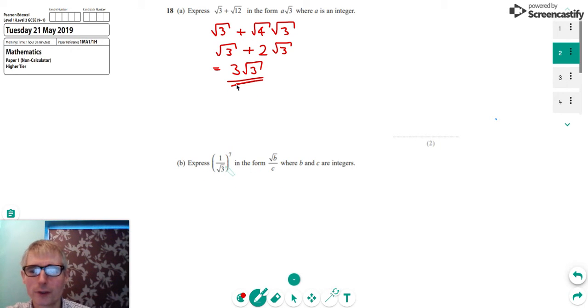If we look at part B, we can see that we're asked to express 1 over root 3 all to the power 7 in this form root B over C where B and C are integers, which means whole numbers. So what we're going to do, we're going to use a rule, which is that if we've got x in a bracket that's to a power, and there's a power also outside the bracket, then we can multiply those two powers together. So that would give us x to the A times B.